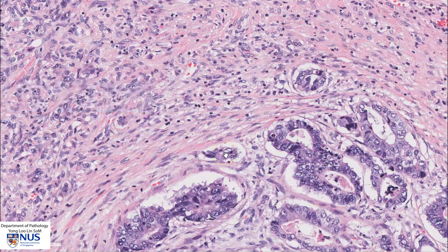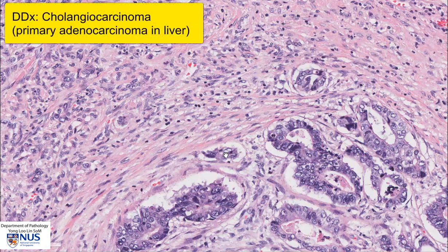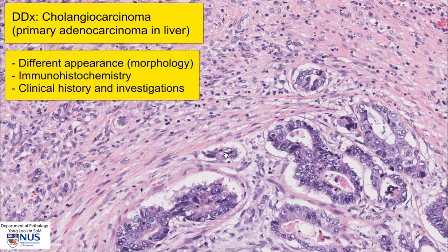There is also a primary adenocarcinoma — a gland-forming malignancy — that can arise in the liver, and this is cholangiocarcinoma, which arises from bile ducts. How do we know this is metastatic colonic cancer rather than primary cholangiocarcinoma? The morphology is a little different: for colorectal carcinoma, there is usually prominent cribriform architecture and luminal necrosis. Immunohistochemistry can also help, and a known clinical history of a colonic tumor with multiple liver nodules further suggests metastatic colorectal tumor.